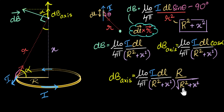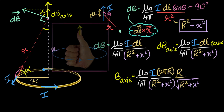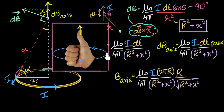Now I can integrate this. Just like before, everything is a constant, and the only thing to integrate is dL. The integral of dL is the total length, which is 2πr. So the total magnetic field along the axis is the result of that integration. The direction of the magnetic field will be along the axis, and to remember which direction, use the right-hand thumb rule: four fingers give the direction of the current, and the thumb represents the direction the magnetic field points.